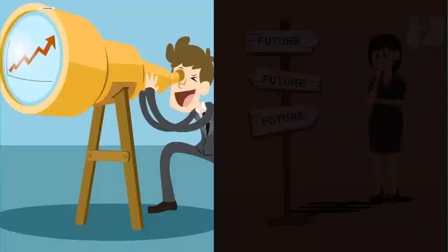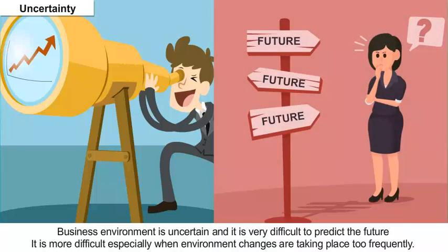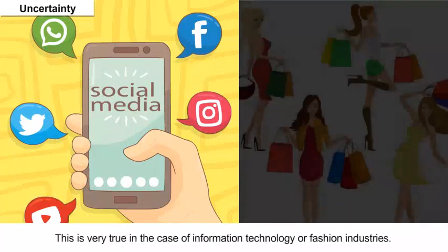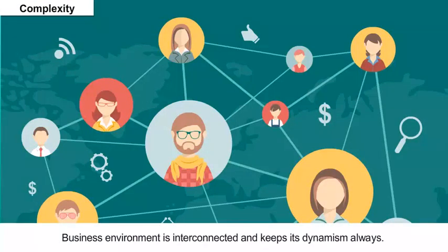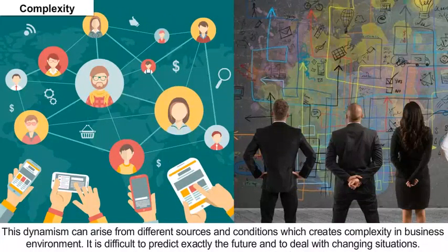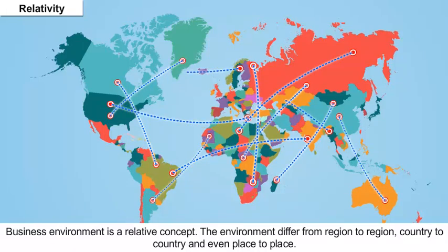Uncertainty: Business environment is uncertain and it is very difficult to predict the future. It is more difficult especially when environment changes are taking place too frequently. This is very true in the case of information technology or fashion industries. Complexity: Business environment is interconnected and dynamic, and this dynamism can arise from different sources and conditions, making it difficult to predict and deal with changing situations. Relativity: Business environment is a relative concept — the environment differs from region to region, country to country, and even place to place.